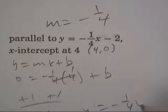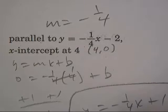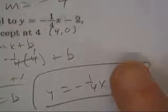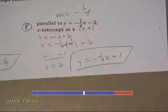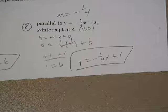y equals negative one-fourth x plus one. Since you figured out b is one, you're good on that one and we'll return.